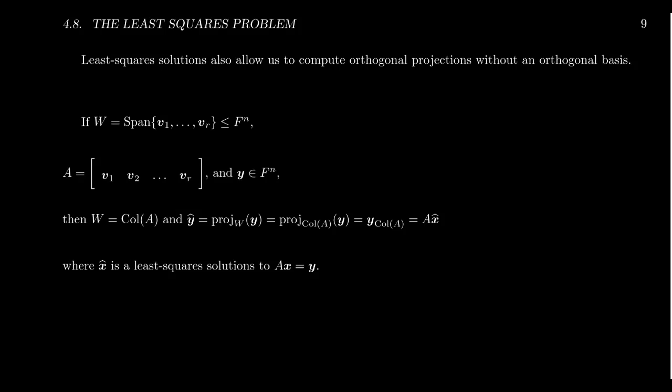Another thing I wanted to comment about here is that the least squares problem actually allows us to compute orthogonal projections without using an orthogonal basis. We have learned previously in this chapter that we can compute orthogonal bases using the Gram-Schmidt process. But we don't need an orthogonal basis to do an orthogonal projection. So let's say we have a vector space W and we have a spanning set, preferably a basis. So assume V1 up through VR is linearly independent.